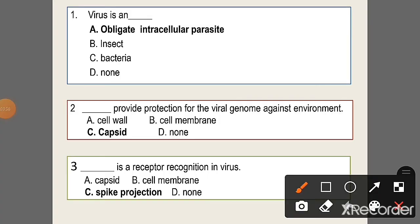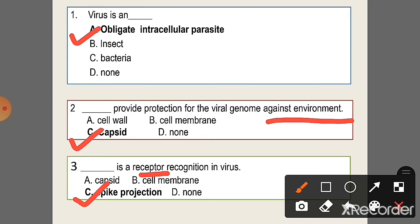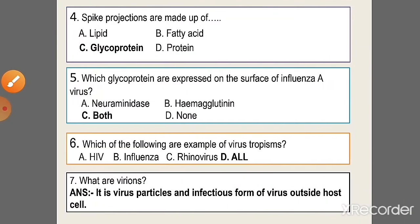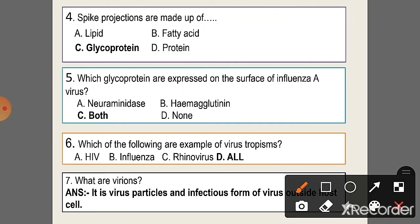Question 1: A virus is an obligate intracellular parasite. Question 2: The function of the viral capsid is to provide protection from the environment for the viral genome — option C, capsule. Question 3: Receptor recognition in virus — option C, spike projection.